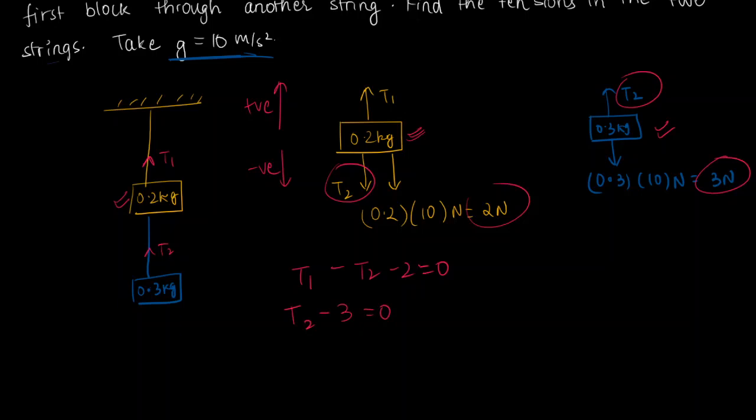If you solve the second equation, you get T2 to be equal to 3 newtons since we are taking everything in newtons. And you plug that in right here, you get T1 minus 3 minus 2 is equal to 0. That means T1 is equal to 5 newtons.